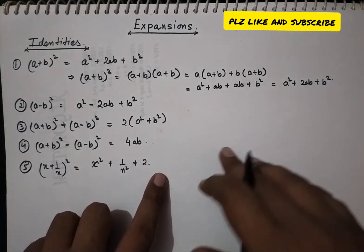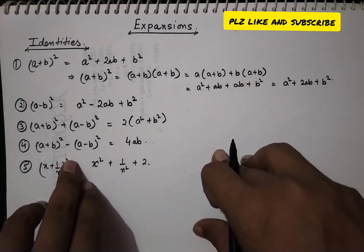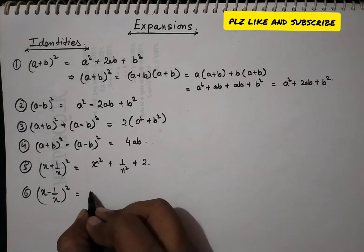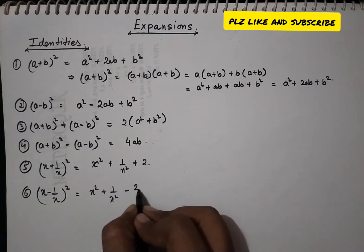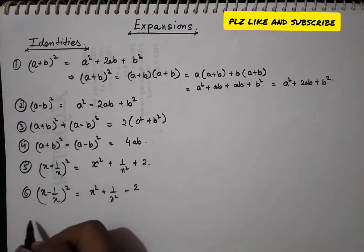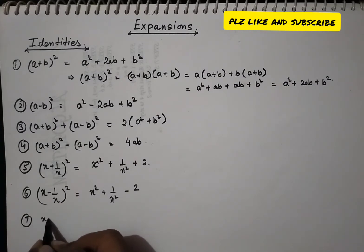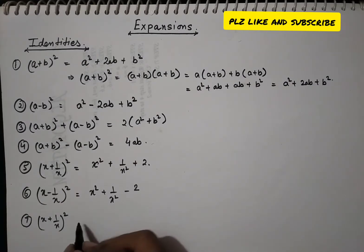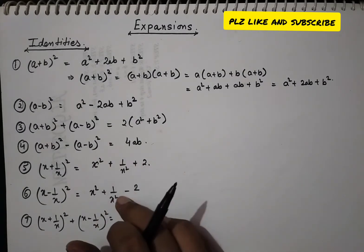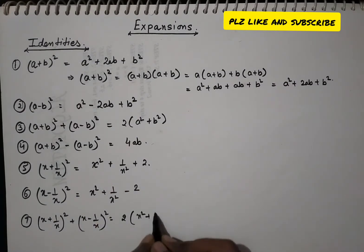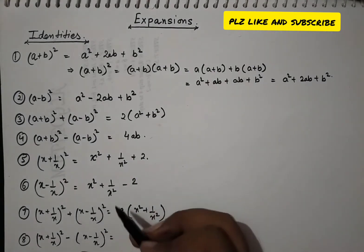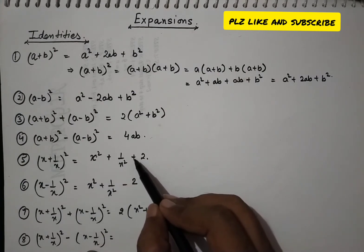Similarly, (x − 1/x)² = x² + 1/x² − 2. Adding these two gives (x + 1/x)² + (x − 1/x)² = 2(x² + 1/x²). For the difference, the result is 4.